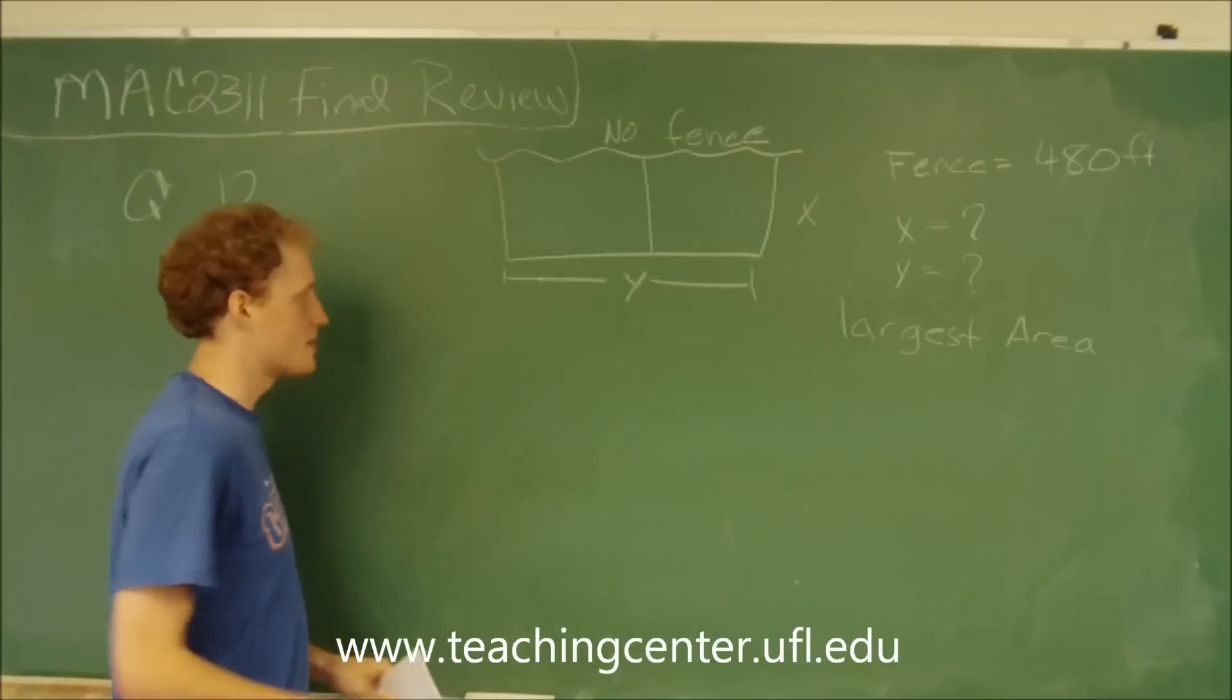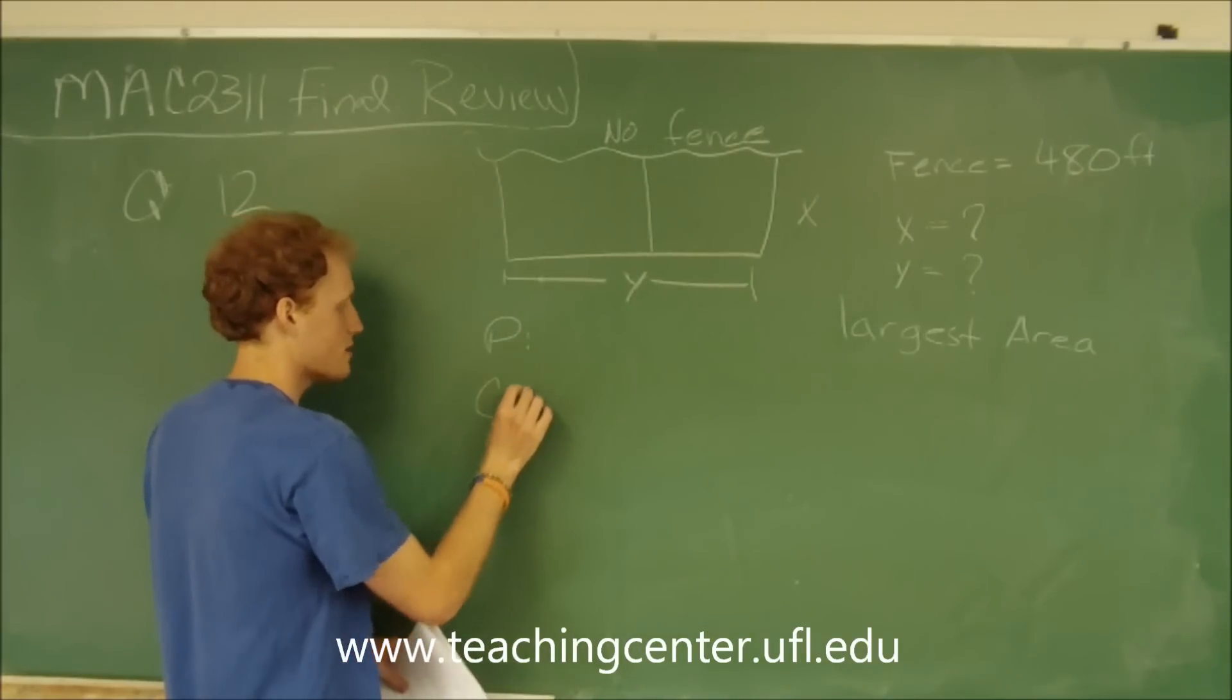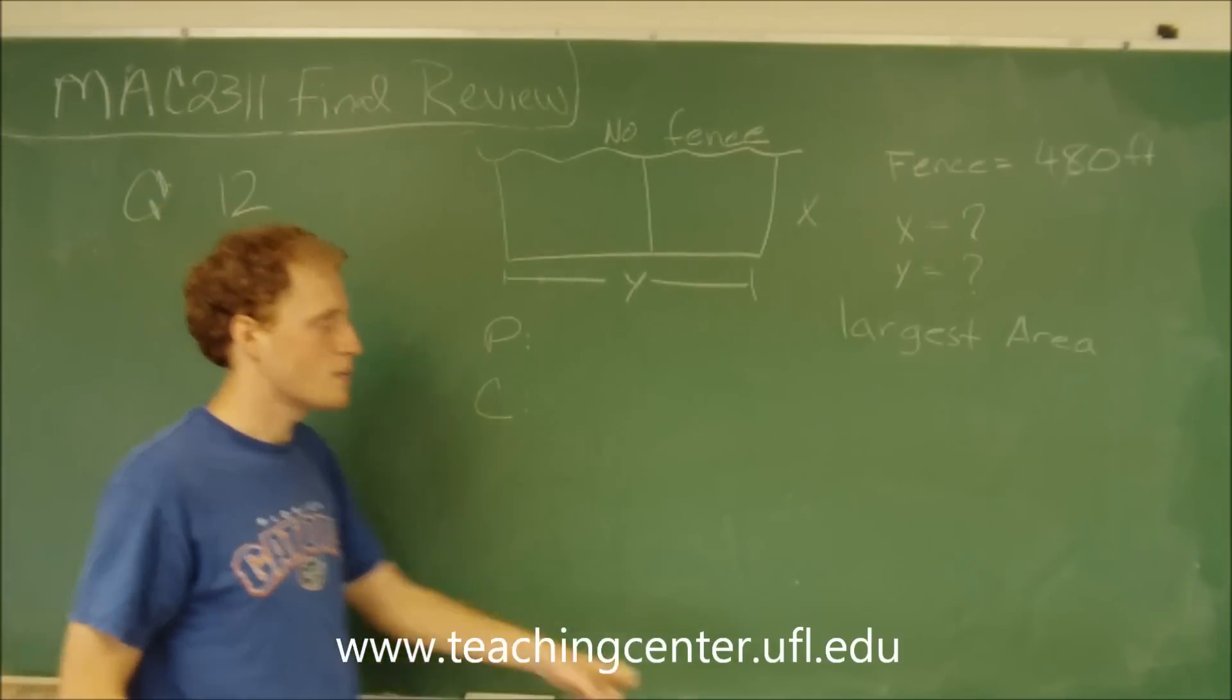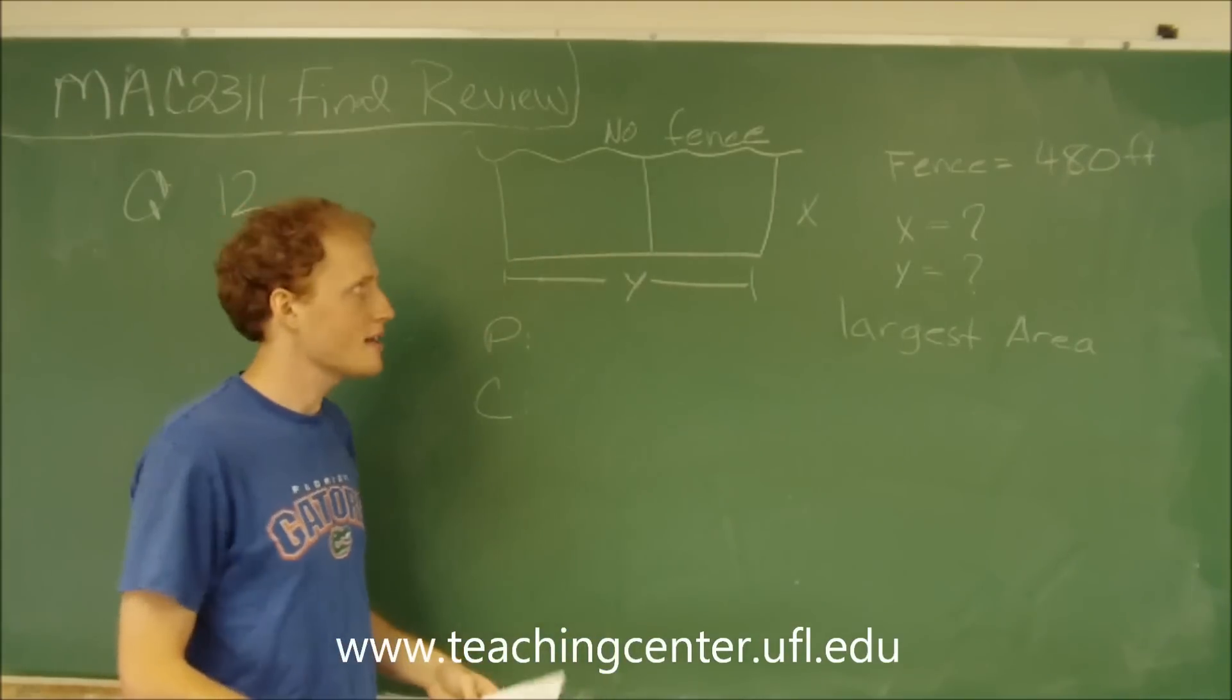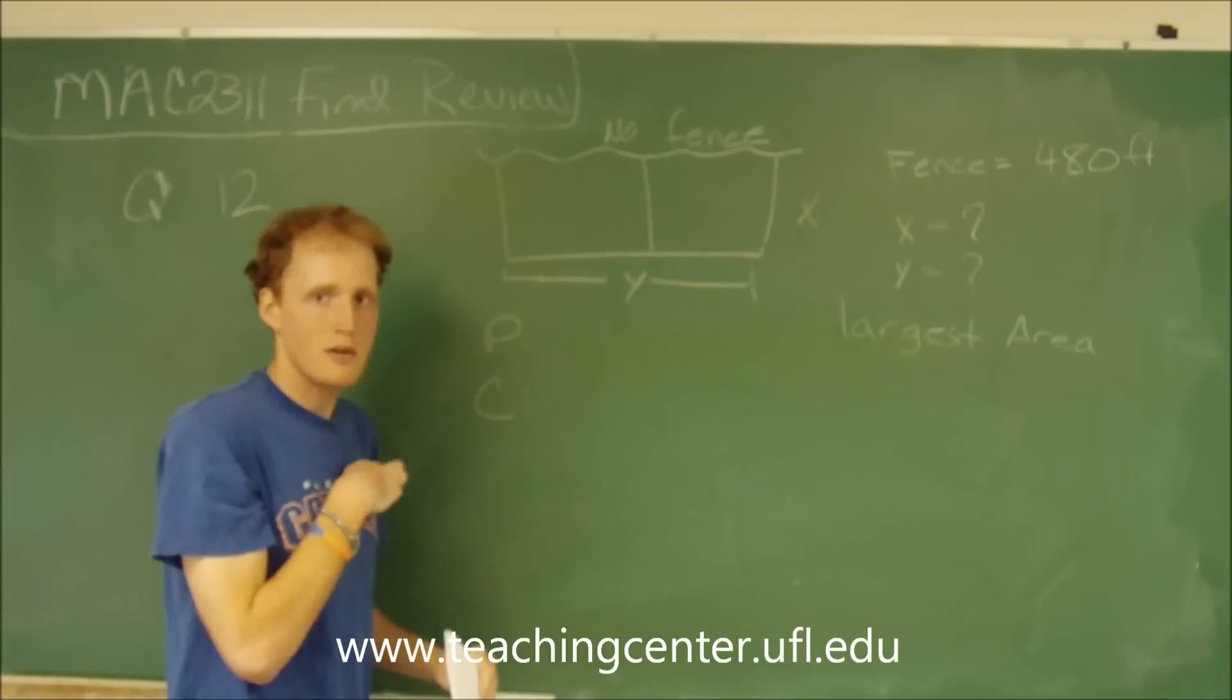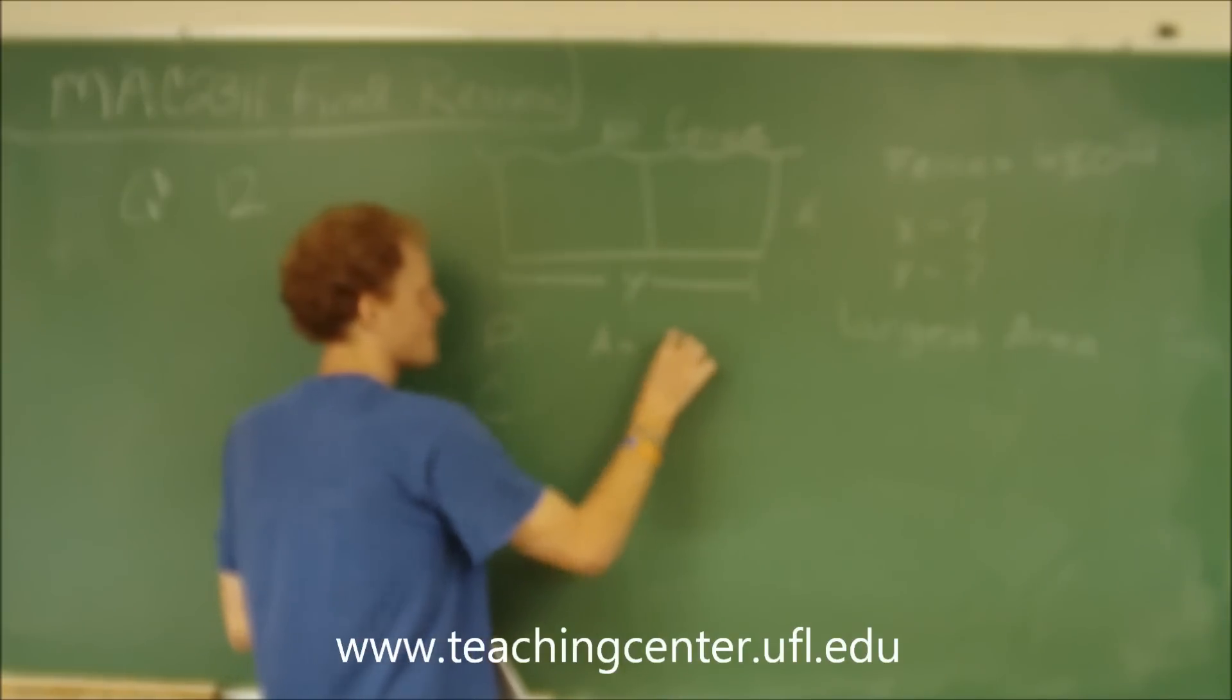So for all optimization problems we need a primary function and a constraint. The primary function is what we're trying to optimize, so it's the area. The area of this rectangle is going to be the dimension x times the dimension y. So area equals x times y.